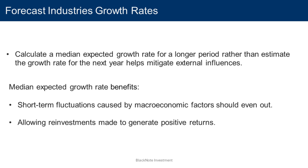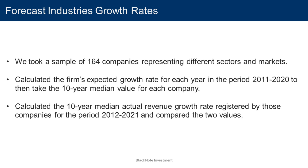A first step which helps mitigate such external influences is to calculate a median expected growth rate over a longer period rather than estimate the growth rate for just the next year. By doing so we obtain a double benefit: firstly, short-term fluctuations caused by macroeconomic factors should even out over a sufficiently long time frame. Secondly, by using a longer period we allow reinvestments made to actually generate positive returns, since a company's investments usually take more than one year to generate a positive return.